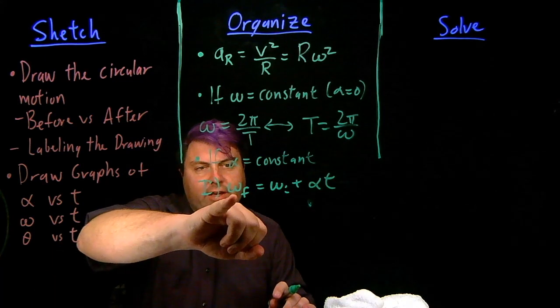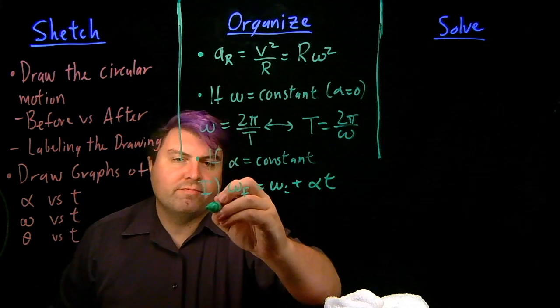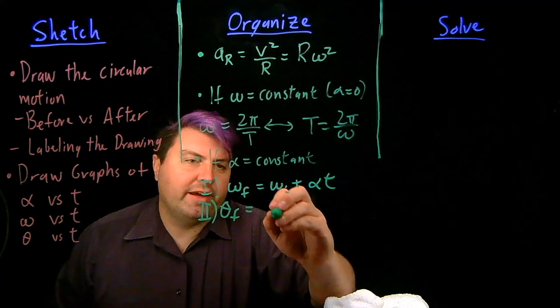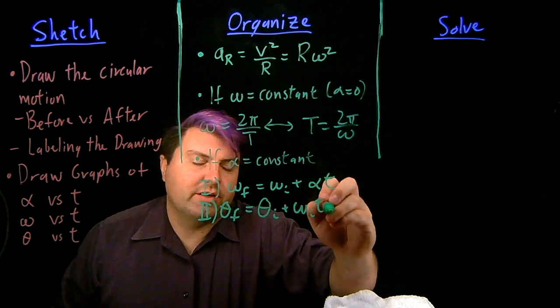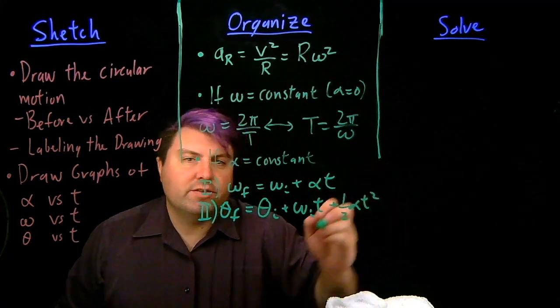We have the final angular velocity equals the initial angular velocity plus alpha times time. And then we have the final angular position equal to the initial angular position plus initial angular velocity times time plus 1 half times alpha T squared.